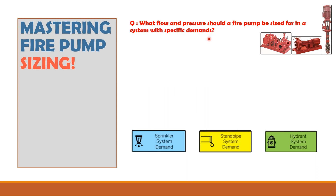For any particular project we have three requirements: a sprinkler system is installed, a standpipe system is installed, and a hydrant network is also installed. We will identify the water demand for each system and then select the fire pump size.